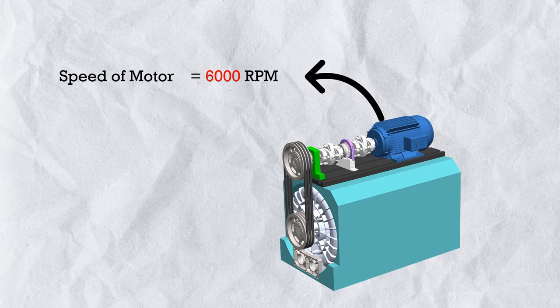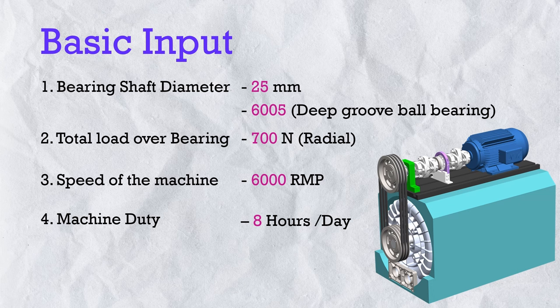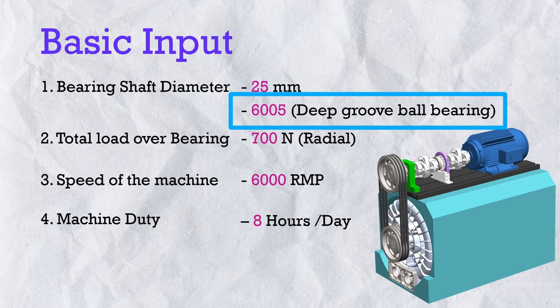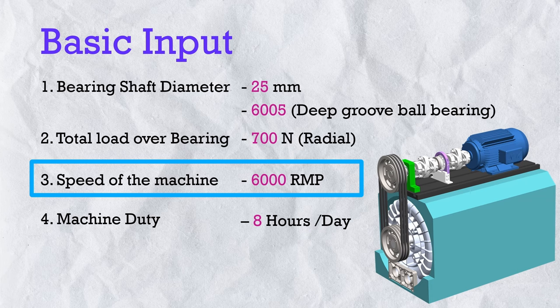We also note the application speed: 6000 RPM. The machine duty is 8 hours per day — the duty cycle is a very important parameter in bearing sizing which we'll cover later. So our basic inputs for calculating bearing rating life are: (1) shaft diameter and selected bearing, (2) total load over the bearing, (3) machine speed, and (4) duty cycle of the machine.